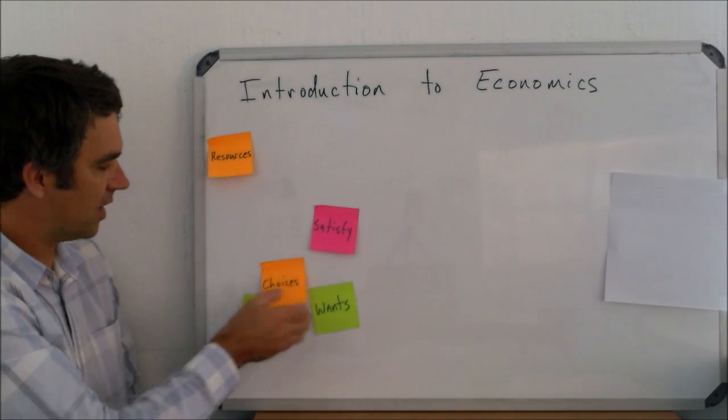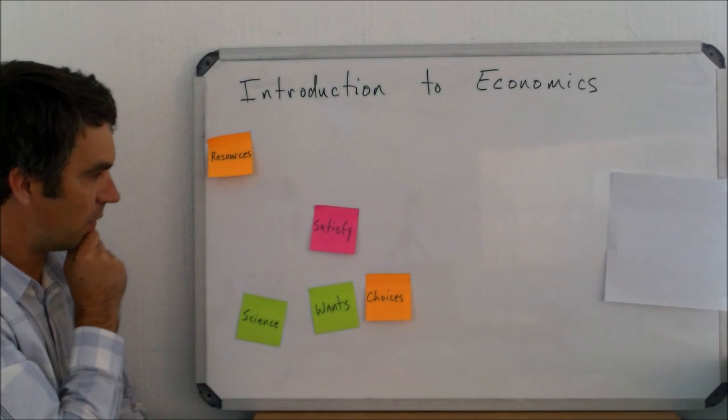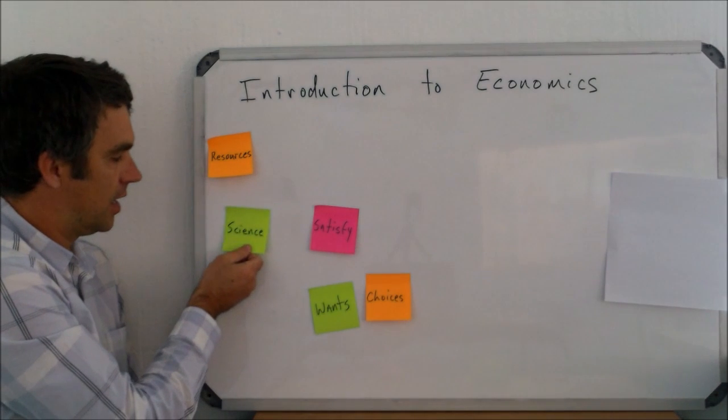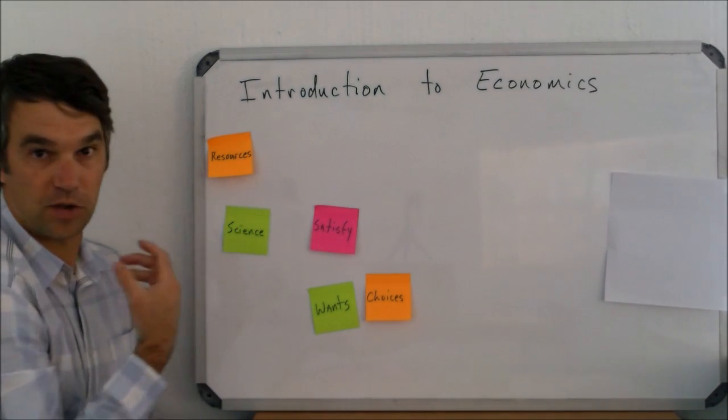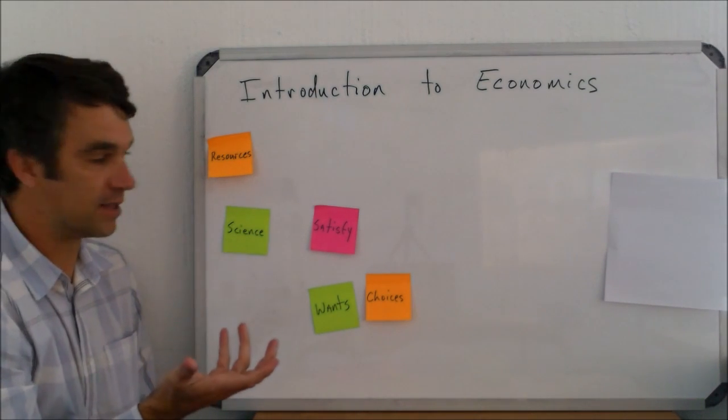So we have these five choices left and these five words left, and let's see if we can't make a definition from them. Well, first and foremost, we know that economics is a social science. It's a study. Science always means study or knowledge. It's a study of how people work in society.